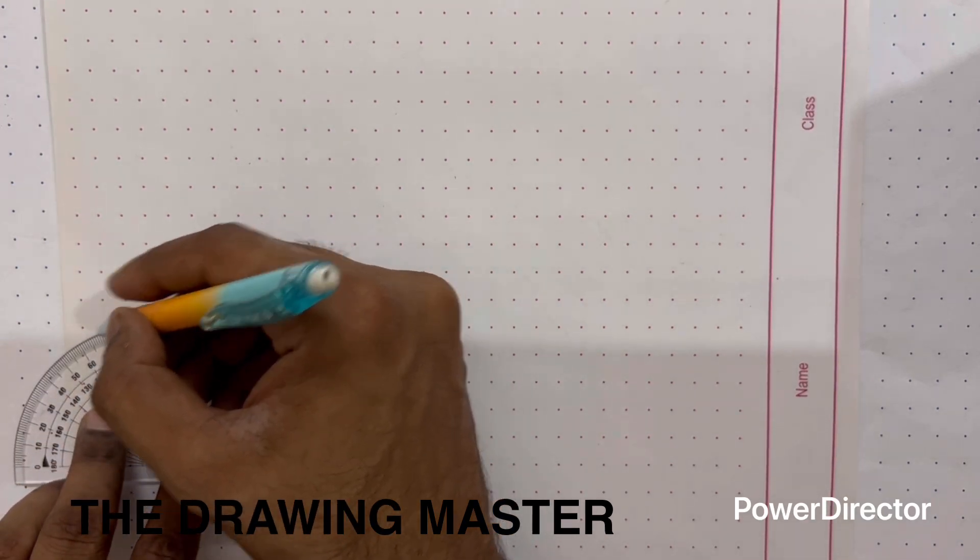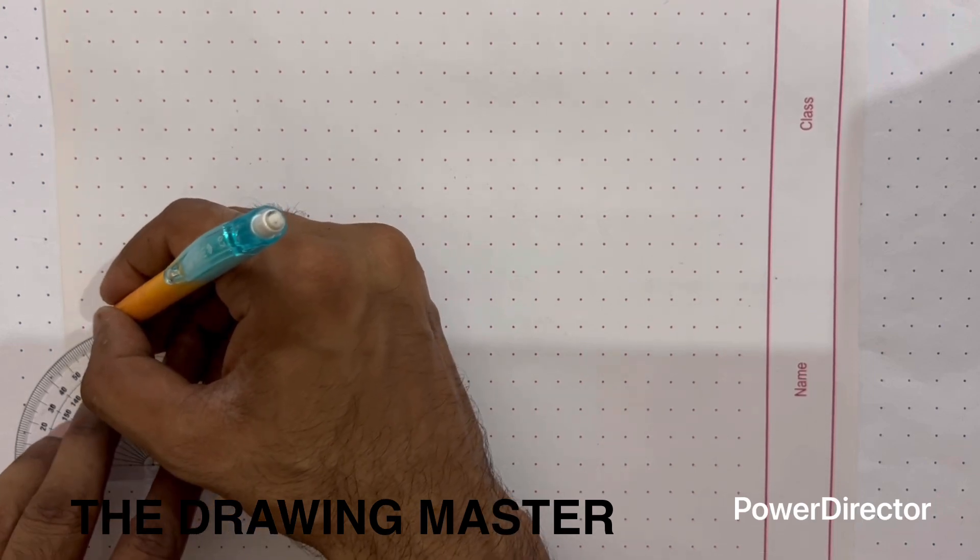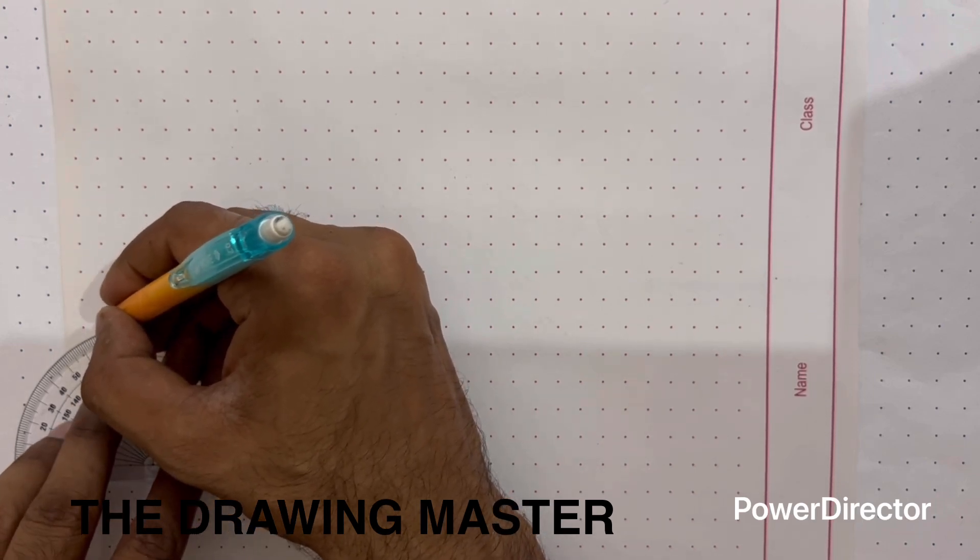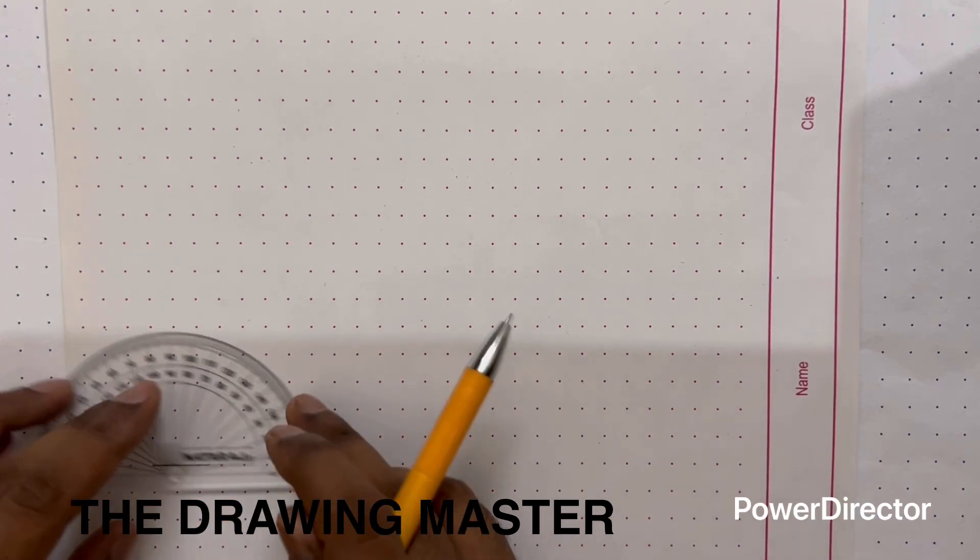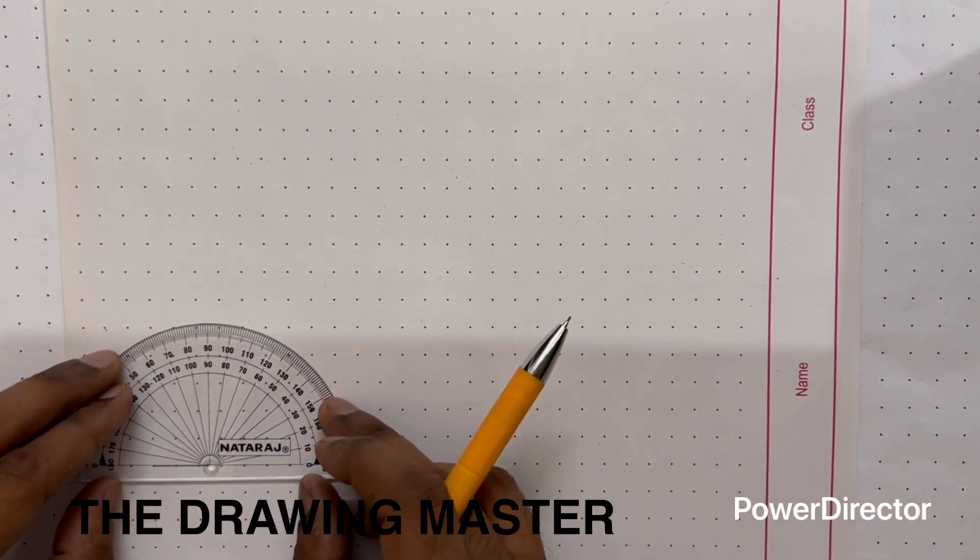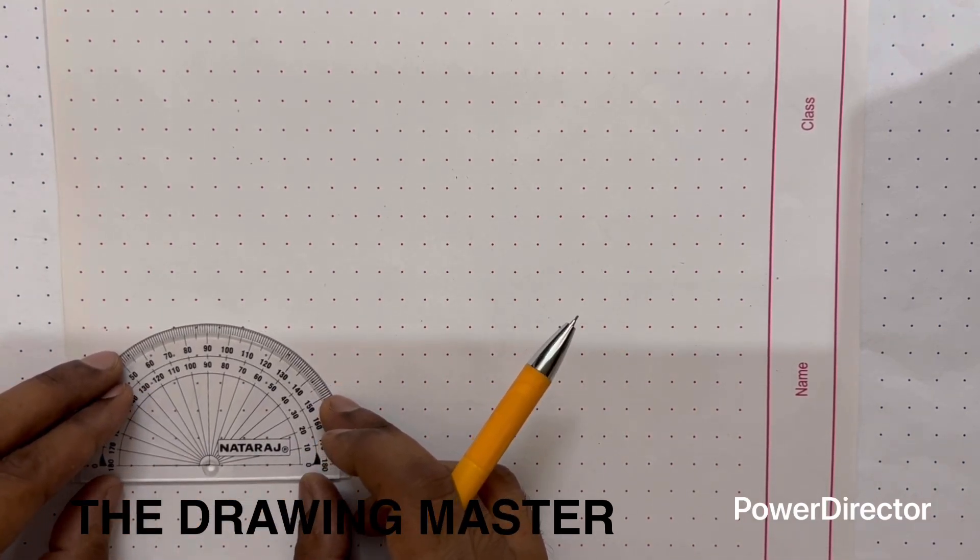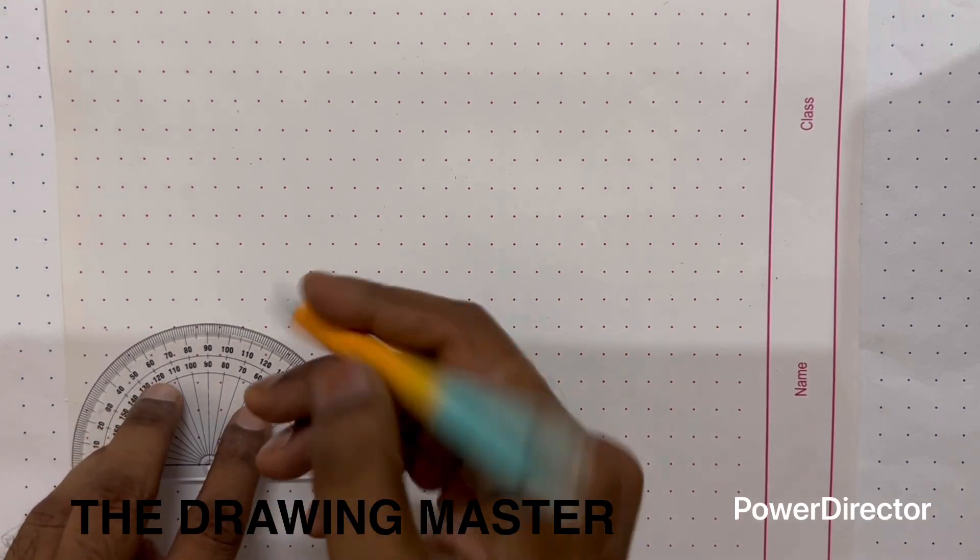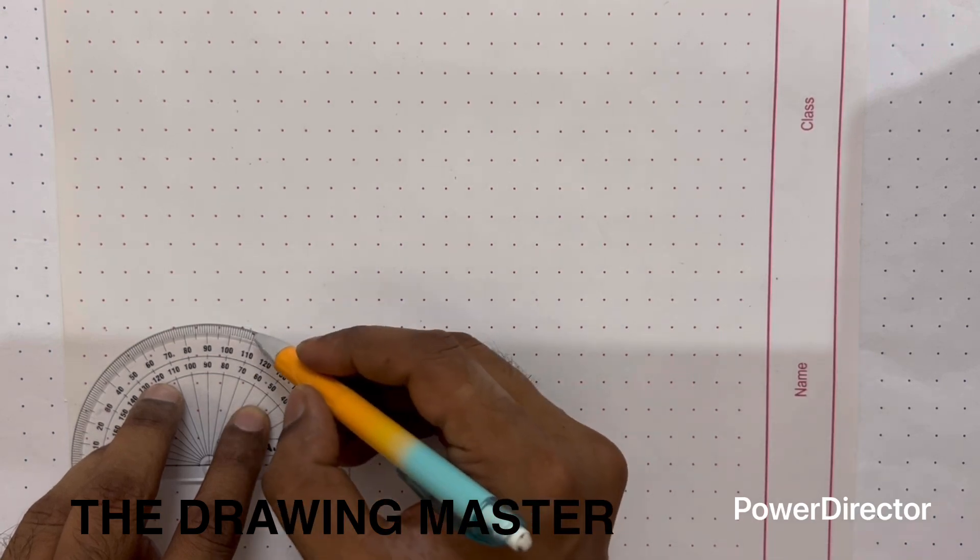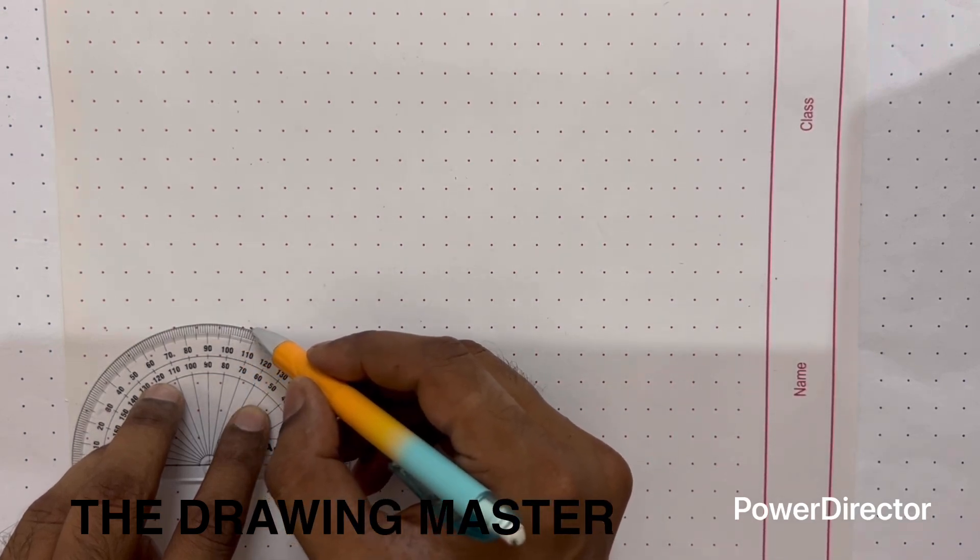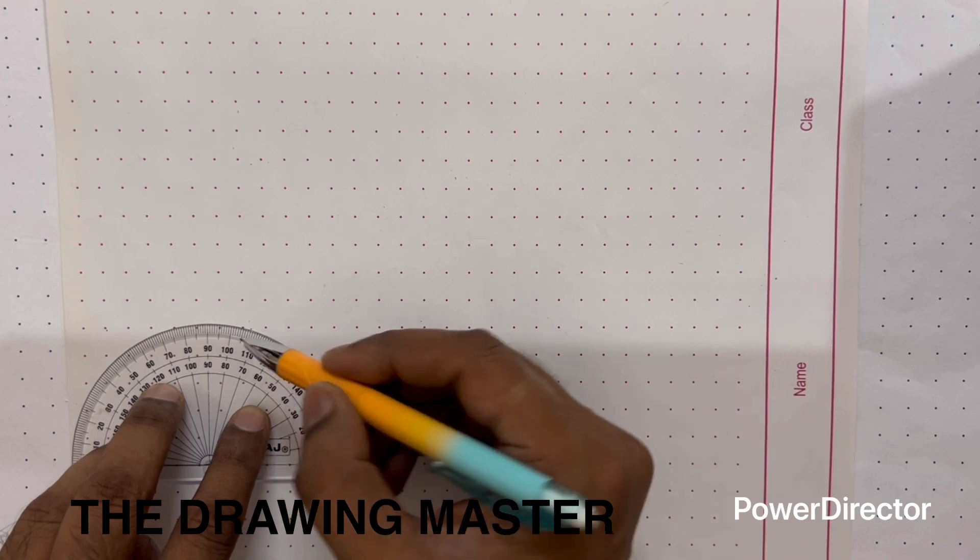This is 90, 100, 110. This is 108, 108 degree, this one. Similarly, this side, 108 degree, 100, 105 and this is 108 degree.